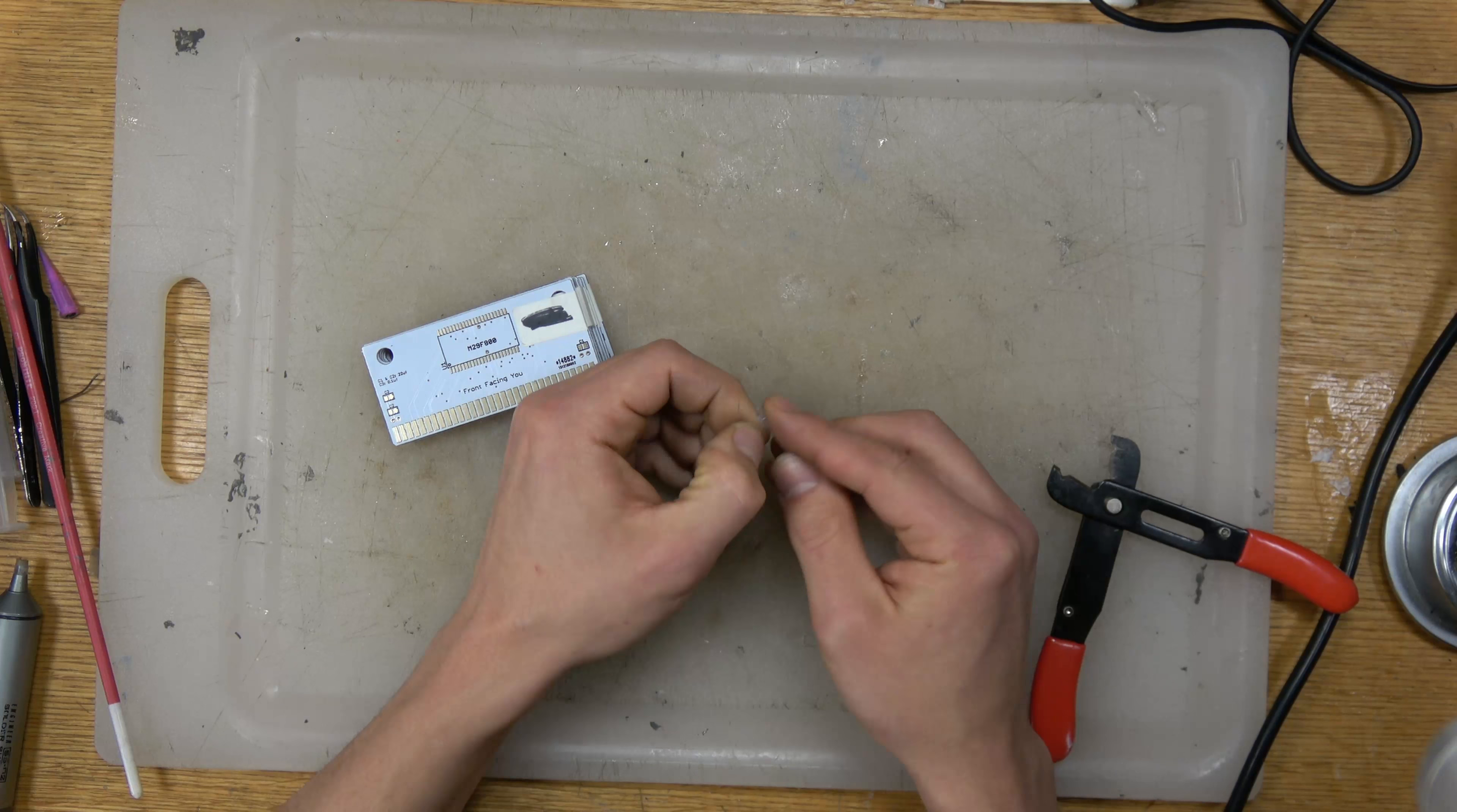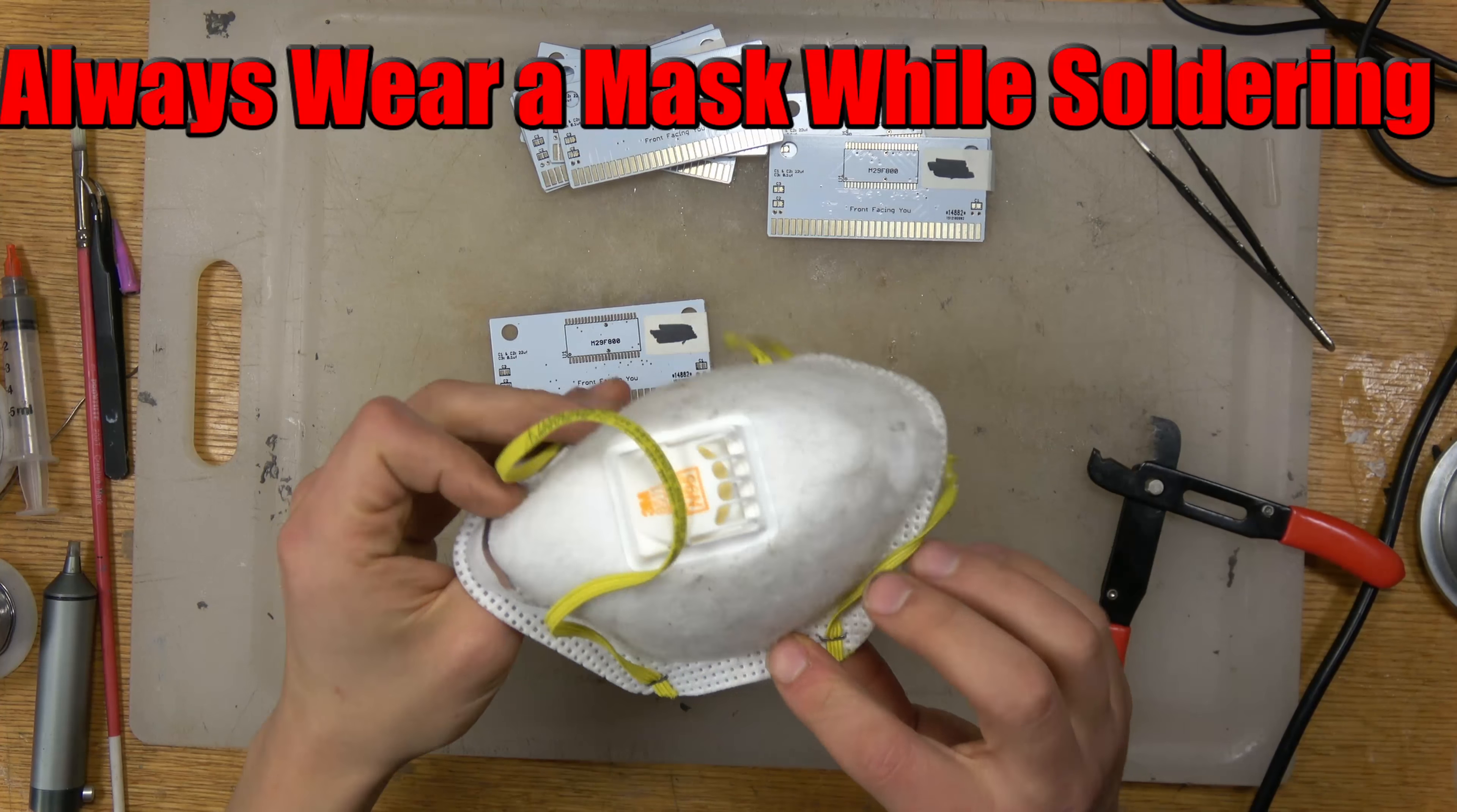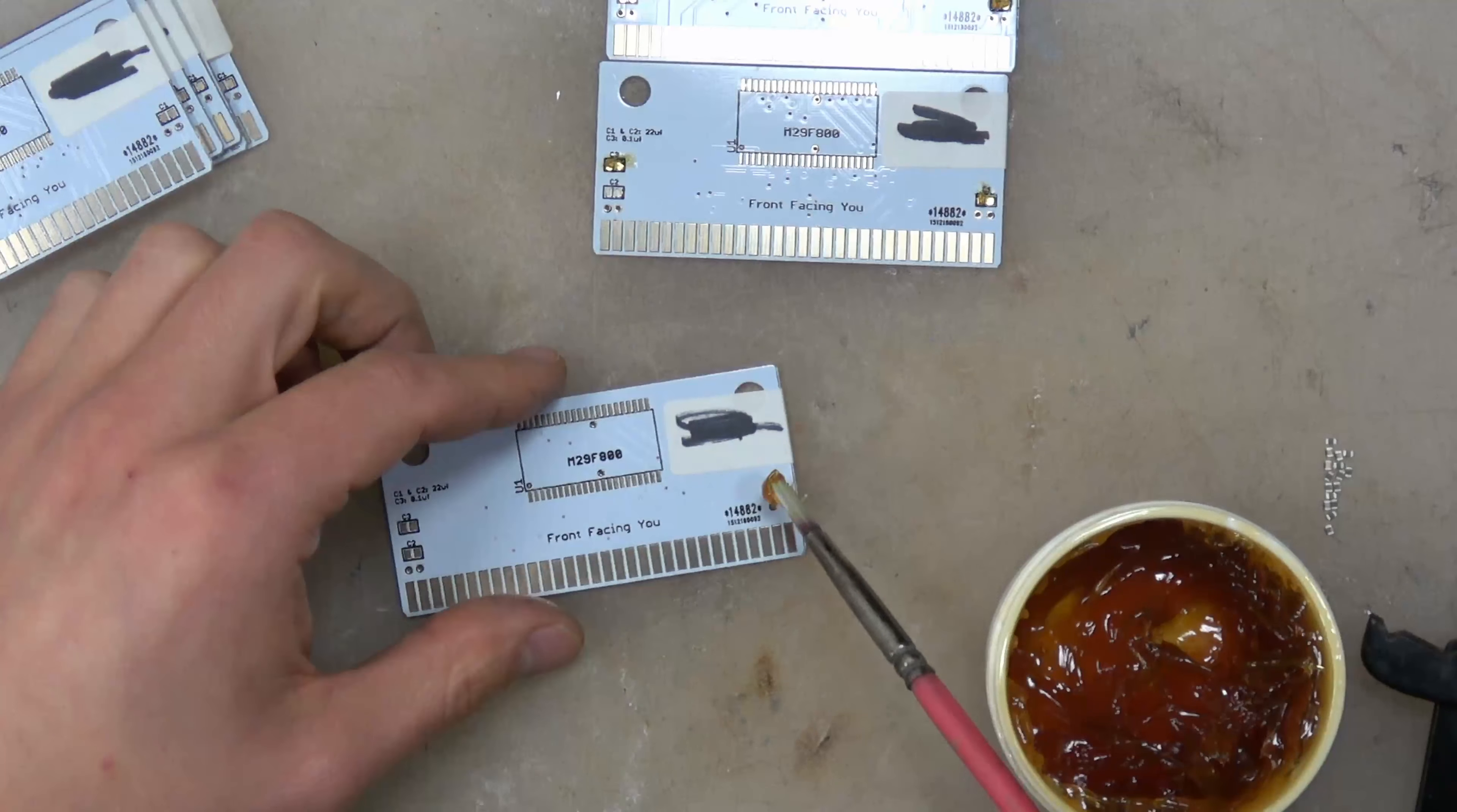Let's start soldering. First we're gonna get all our components ready, getting all of our capacitors out. Once we have those ready, we're gonna use flux and put flux all over the board but first always wear a mask. Solder paste is just tiny little balls of solder suspended in flux.